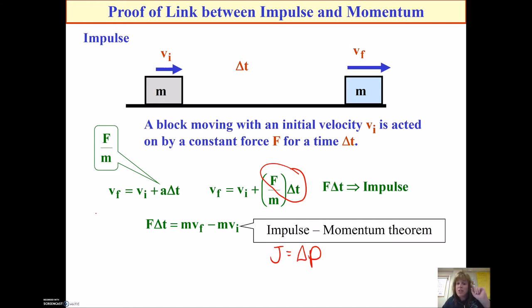Anytime I have an impulse, it equals the change in the momentum of the object. And make sure you pay attention to direction, because if the velocity changes direction, then one of your velocities is going to be negative, and the other is going to be positive. For example, the bouncing ball. On the way down, the velocity is negative. On the way up, the velocity is positive. So velocity is a vector. Make sure that you pay attention to the direction when you calculate the change in momentum.